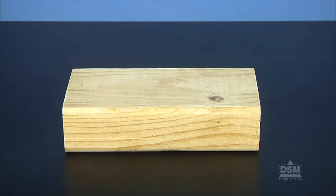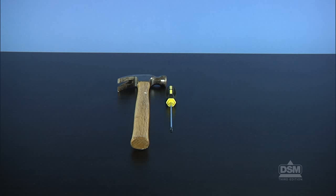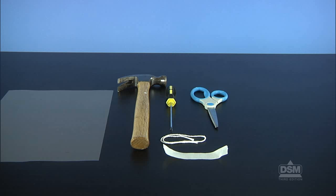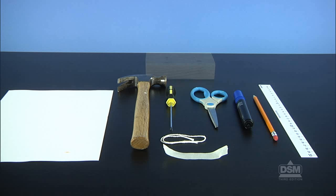Each student will need a pair of safety goggles, a nail, and a screw. Each team of four students will need a screwdriver, a hammer, a pair of scissors, a piece of string, a piece of tape about 11 centimeters long, a sheet of paper, a wide felt tip marker, a pencil, a metric ruler, and a scrap of wood.